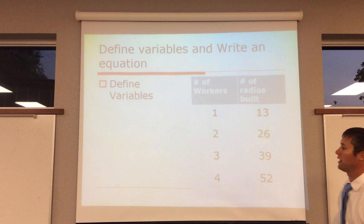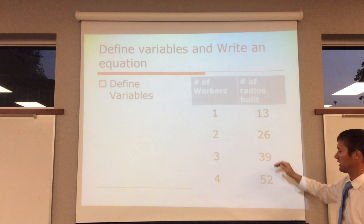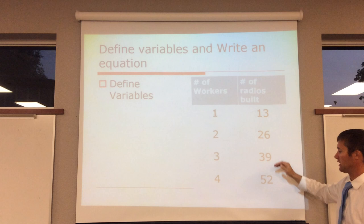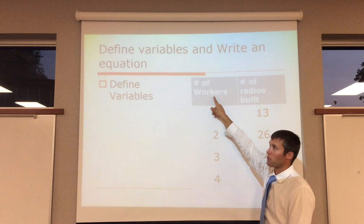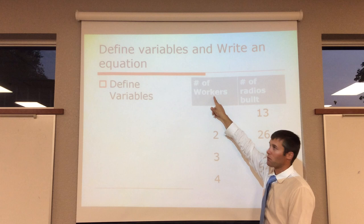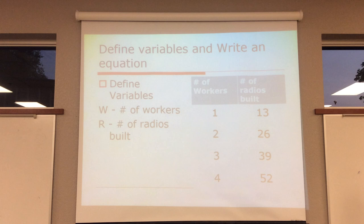I'm going through the last little bit that we have. Define our variables. So, we have two columns, if you look at it. I have 1, 2, 3, 4. I have 13, 26, 39, and 52. So, we want to define our variables, then write an equation. My variables are going to be the tops. So, my variables are number of workers and number of radios built. So, I could say w stands for number of workers. And I could say r is the number of radios built.